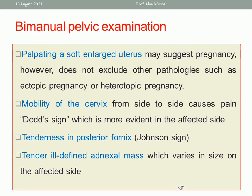On bimanual examination, the uterus is bulky and soft suggesting pregnancy, but this does not exclude ectopic. Cervical excitation — mobility of the cervix associated with pain toward the side of the ectopic — is called Dudd's sign. Tenderness in the posterior fornix is called Johnson's sign. There may also be a tender, ill-defined adnexal mass of varying size on the affected side.